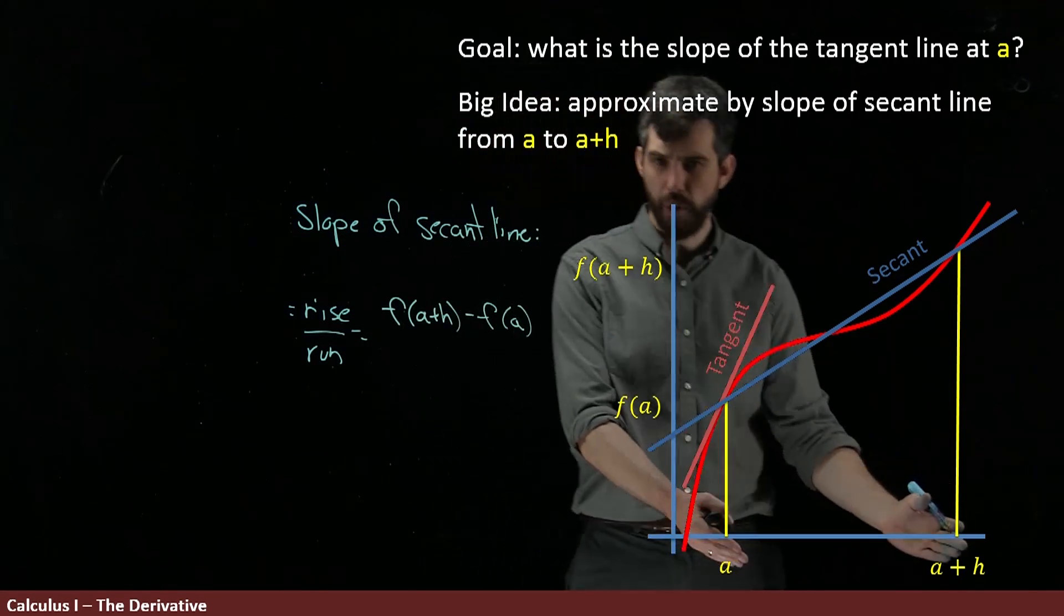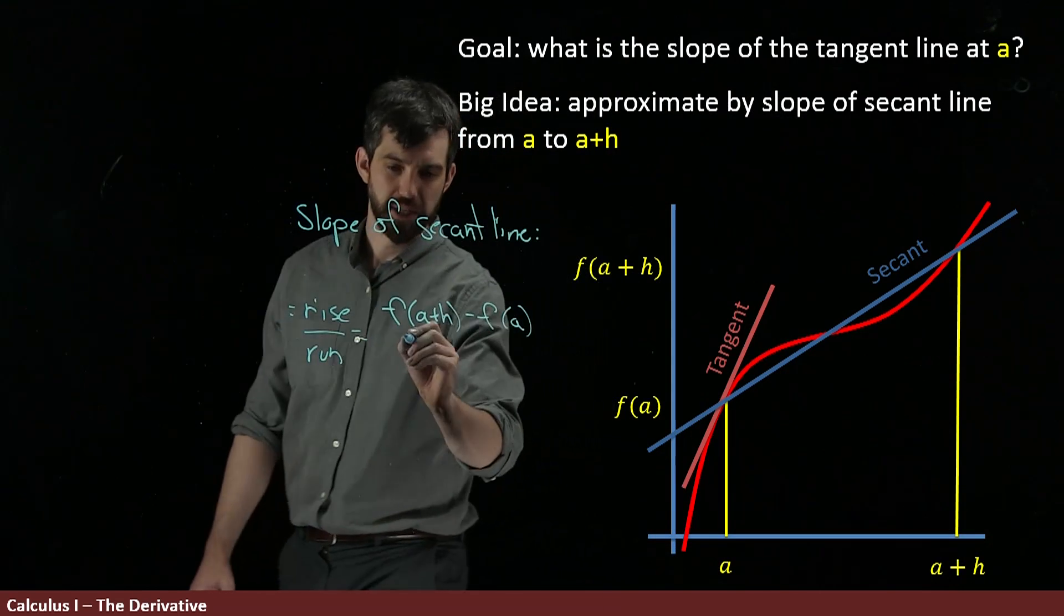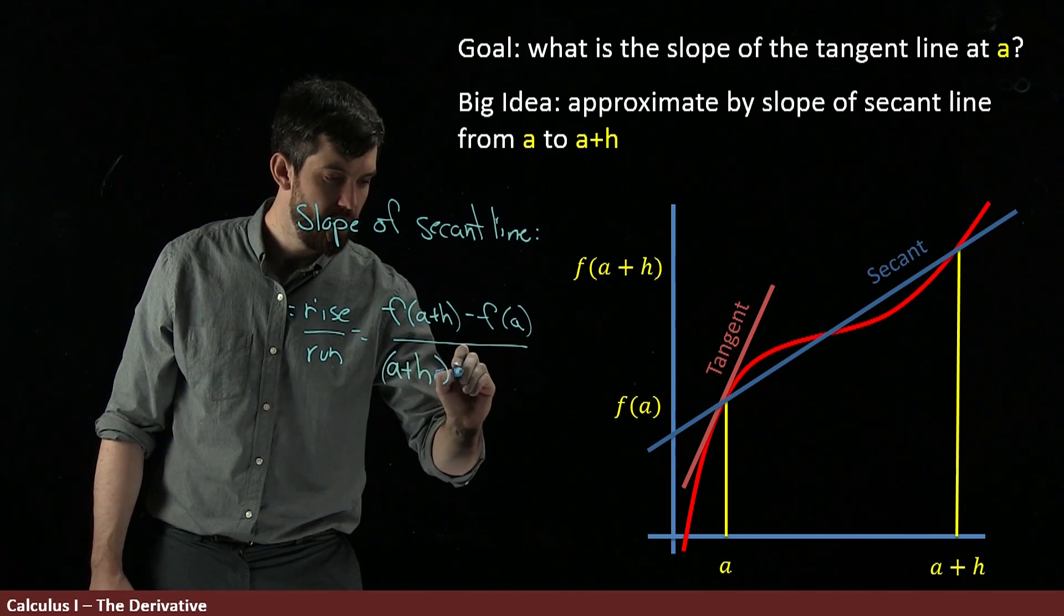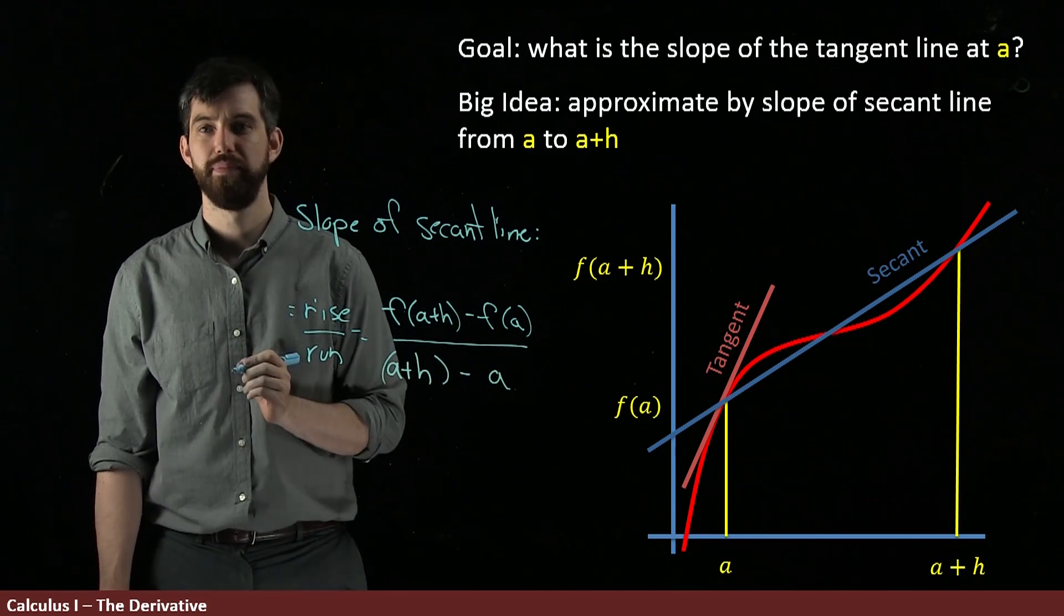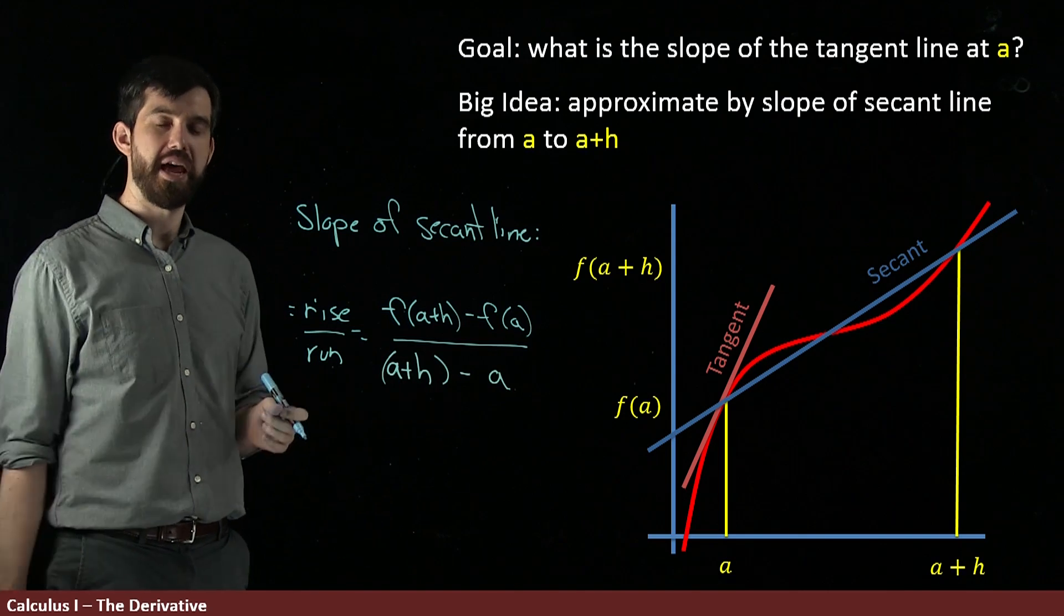Well, now I'm looking down here horizontally. So I have a plus h minus this a. So my run is going to be equal to a plus h minus the value of a. So that is my claim for the slope of the secant line.